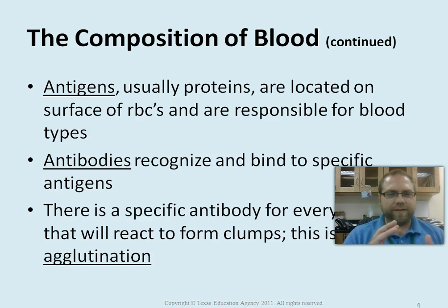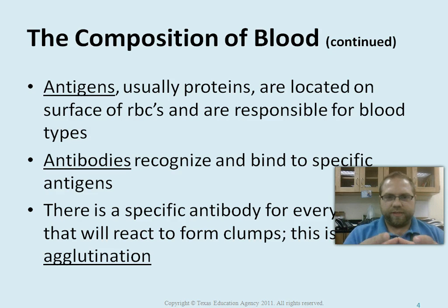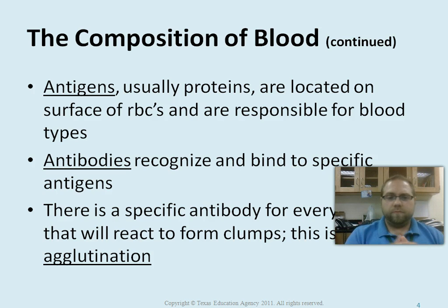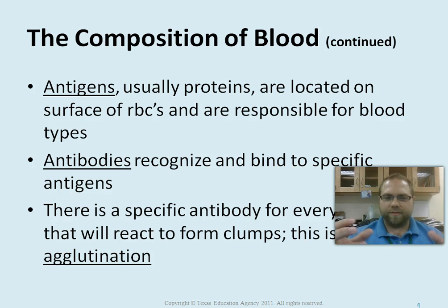Antigens are proteins on the surface of red blood cells. Think of a donut with the middle filled in just a little bit — concave on both sides — and antigens are proteins located on the surface of that disc. Antibodies bind with specific antigens; there's a specific antibody for every antigen, and if it reacts, it will form clumps — that's called agglutination. It works well for blood typing but is not good in real life. It's similar to coagulation, where proteins bind together.